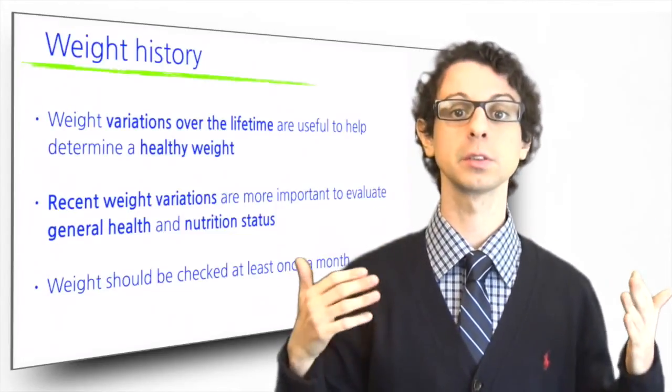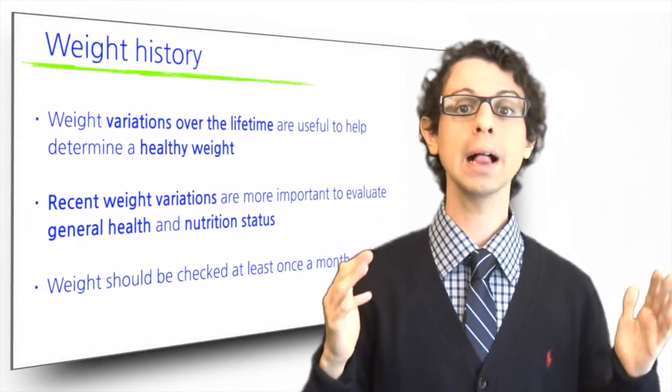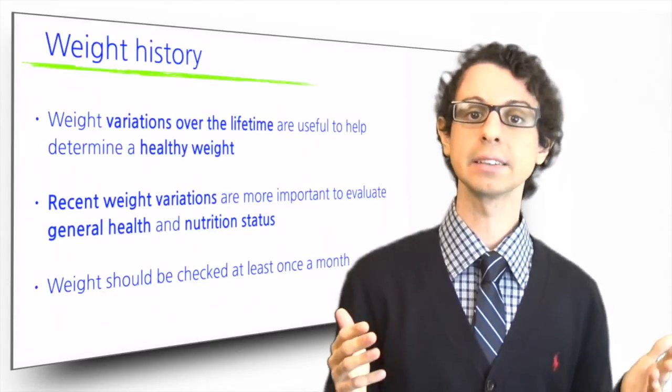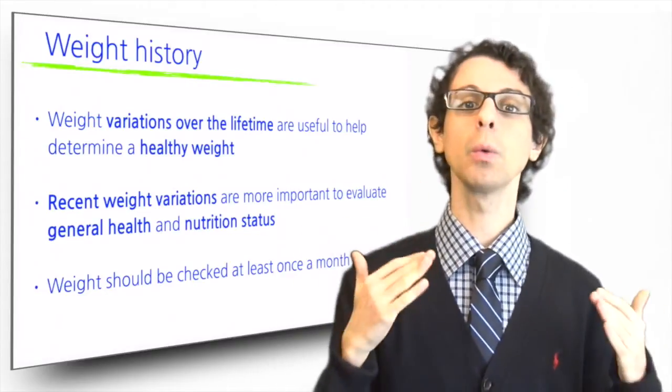Weight variations over the lifetime are useful to help determine a healthy weight. What was the weight during adolescence? In the mid-twenties? What was the lowest and highest? What was it five years ago?